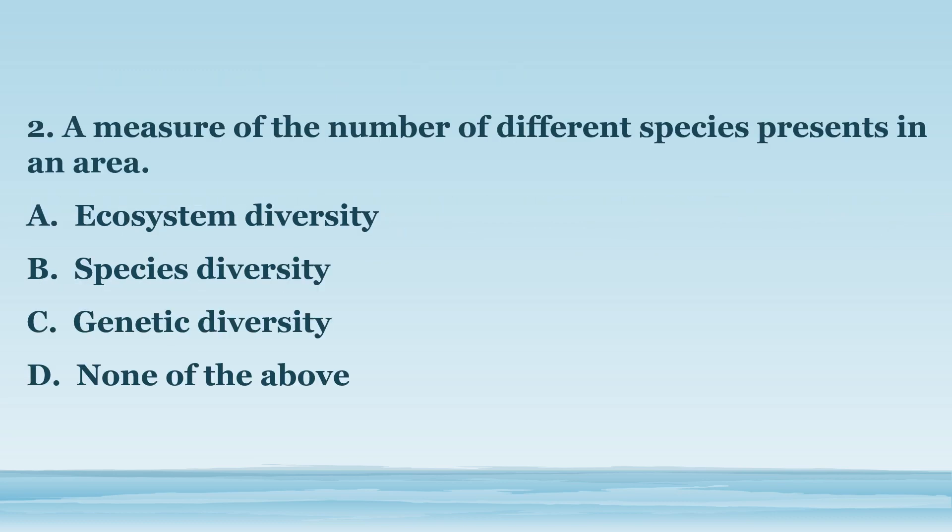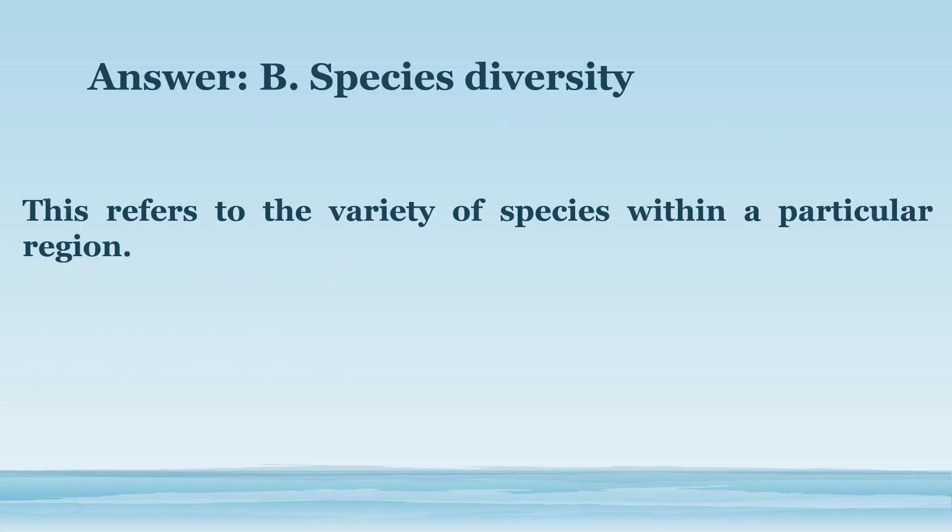Number 2. A measure of the number of different species present in an area. A. Ecosystem Diversity. B. Species Diversity. C. Genetic Diversity. D. None of the above. The answer is letter B. Species Diversity. This refers to the variety of species within a particular region.